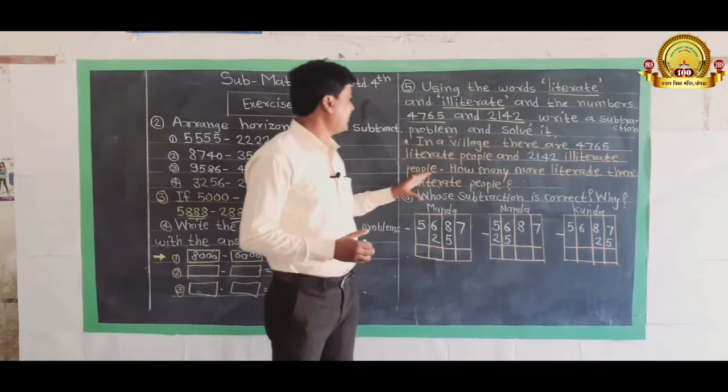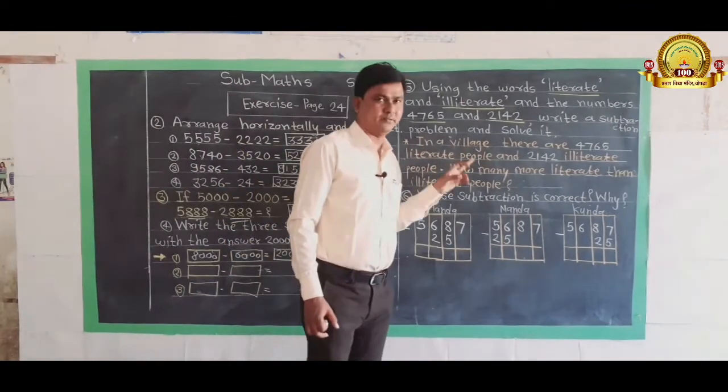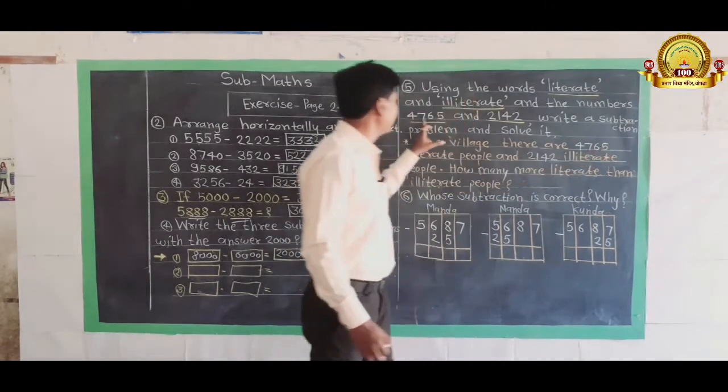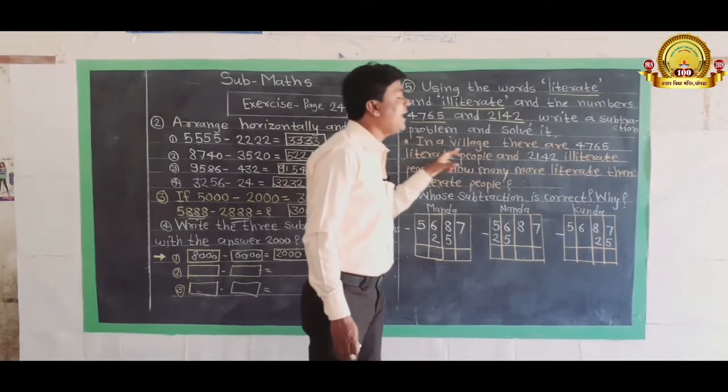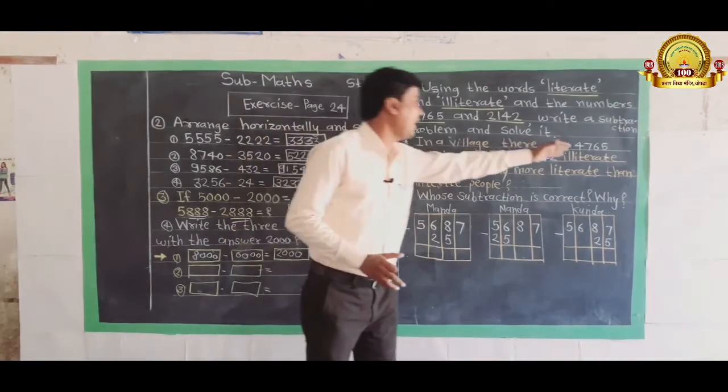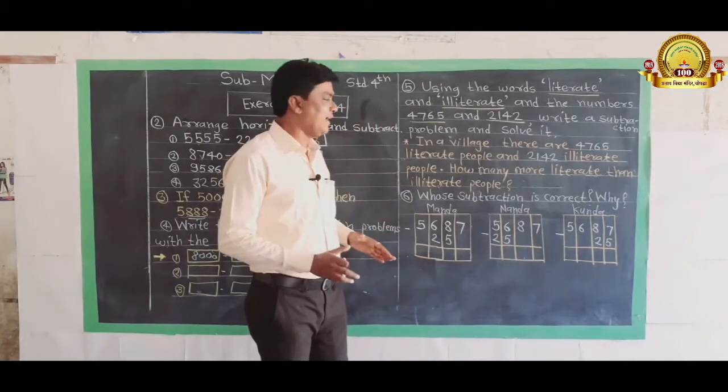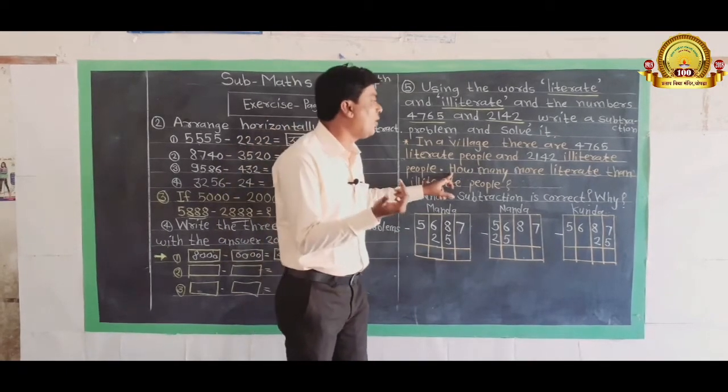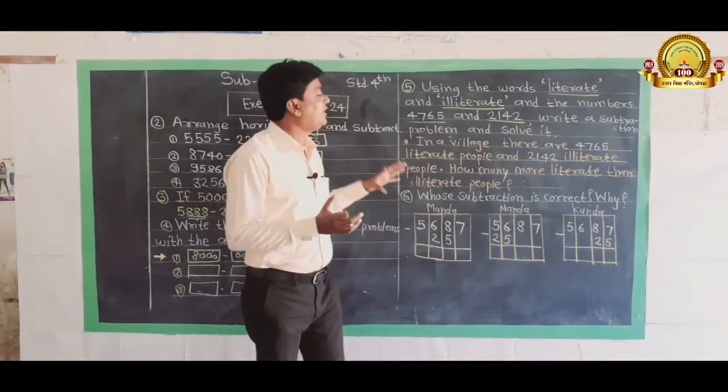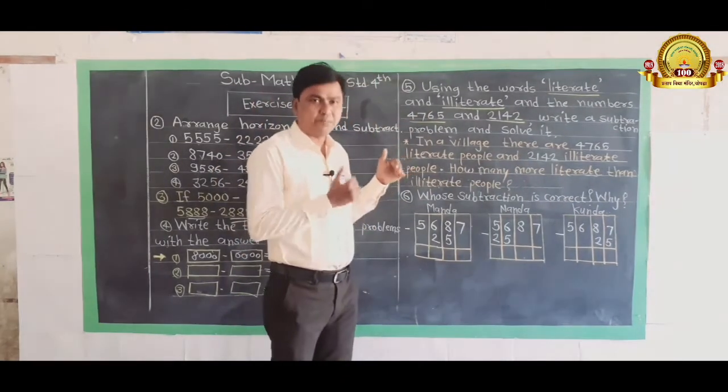I have made specimen example for that. In a village, there are 4765 literate people. That village has literate people, saksar lok and 2142 illiterate people, nirakshar lok. How many more literate than illiterate people?